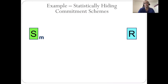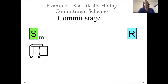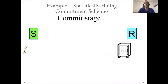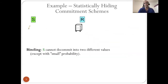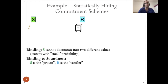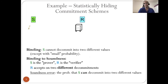In such a scheme, we have a sender S, receiver R, and the sender has message M. In the commit stage, the sender commits on the message, and in the reveal stage, it decommits. We have a binding guarantee that the efficient S cannot decommit into two different values except with some small probability. We can think of S as the prover and R as the verifier, and the soundness error is exactly the probability that S can decommit into two different values.